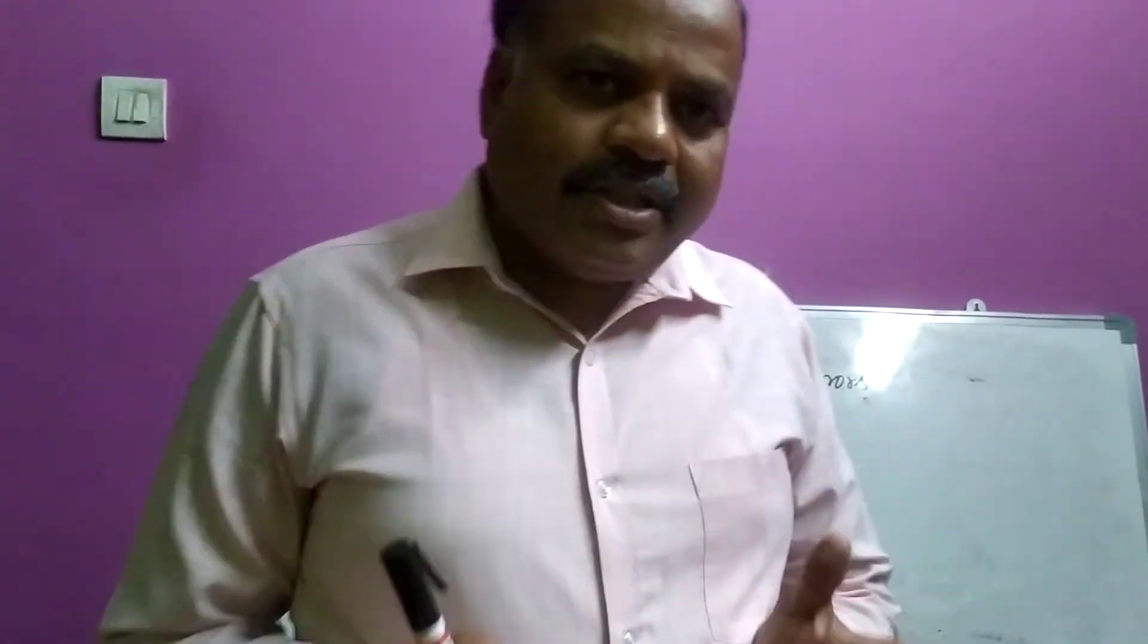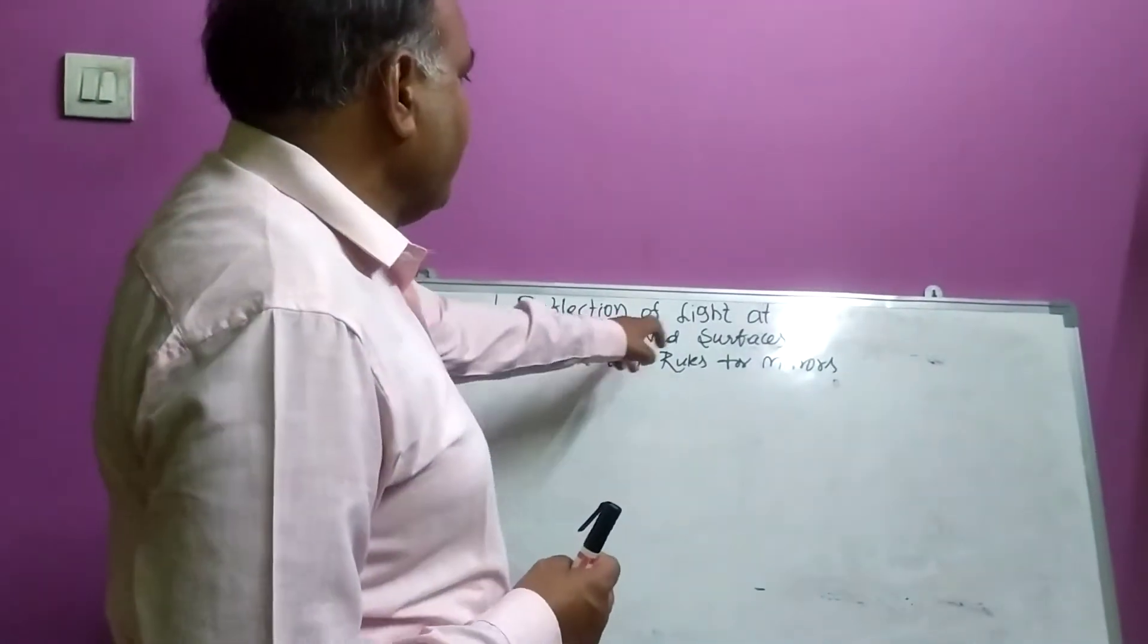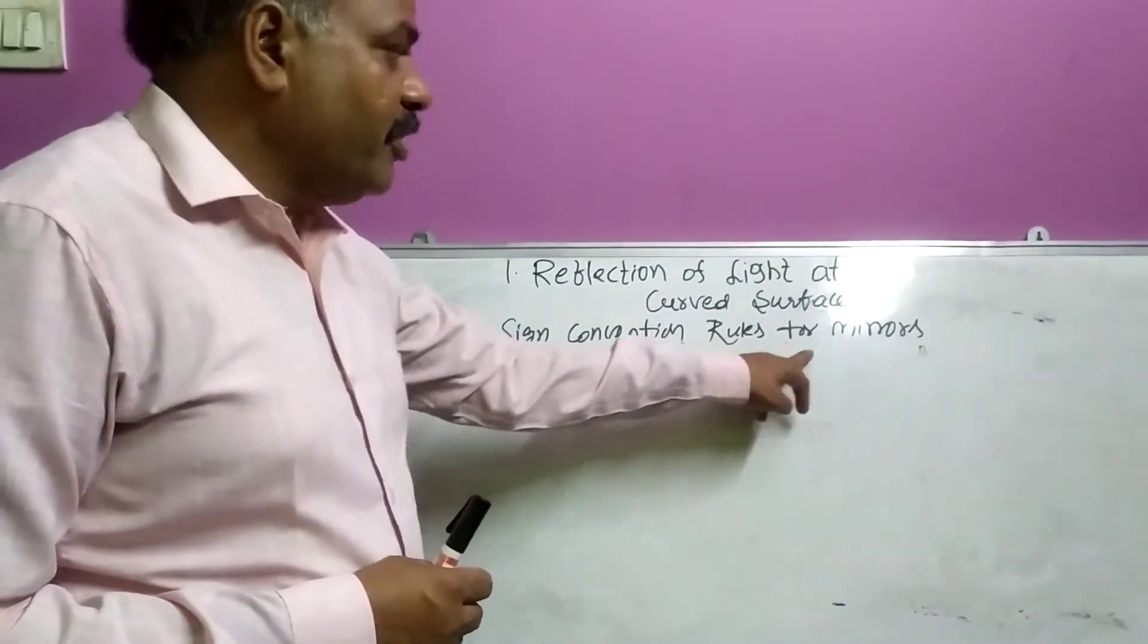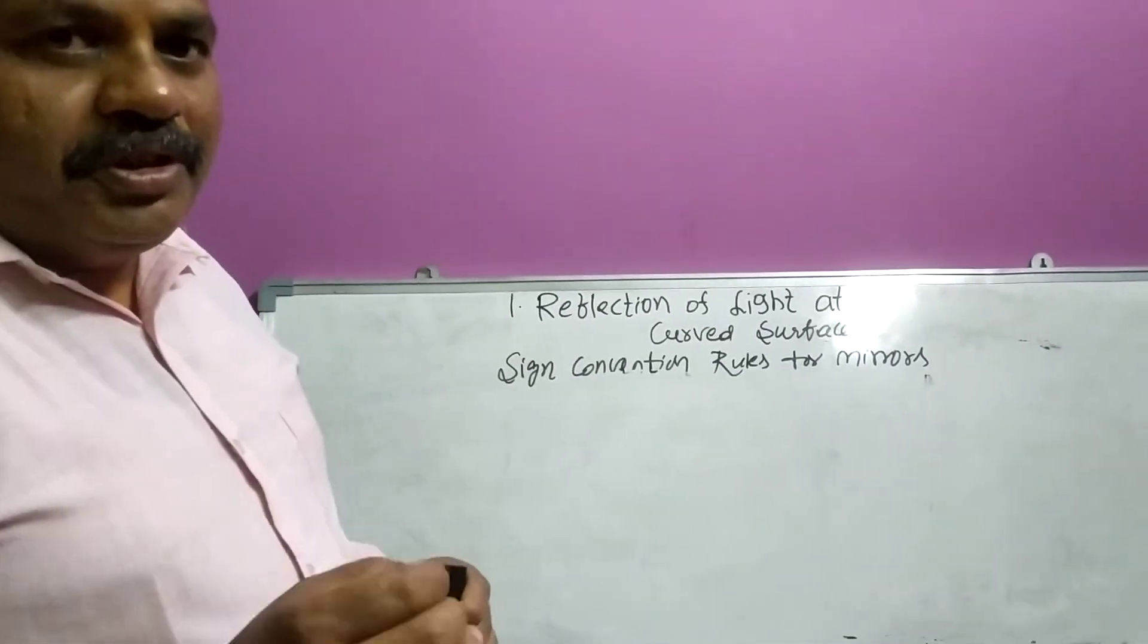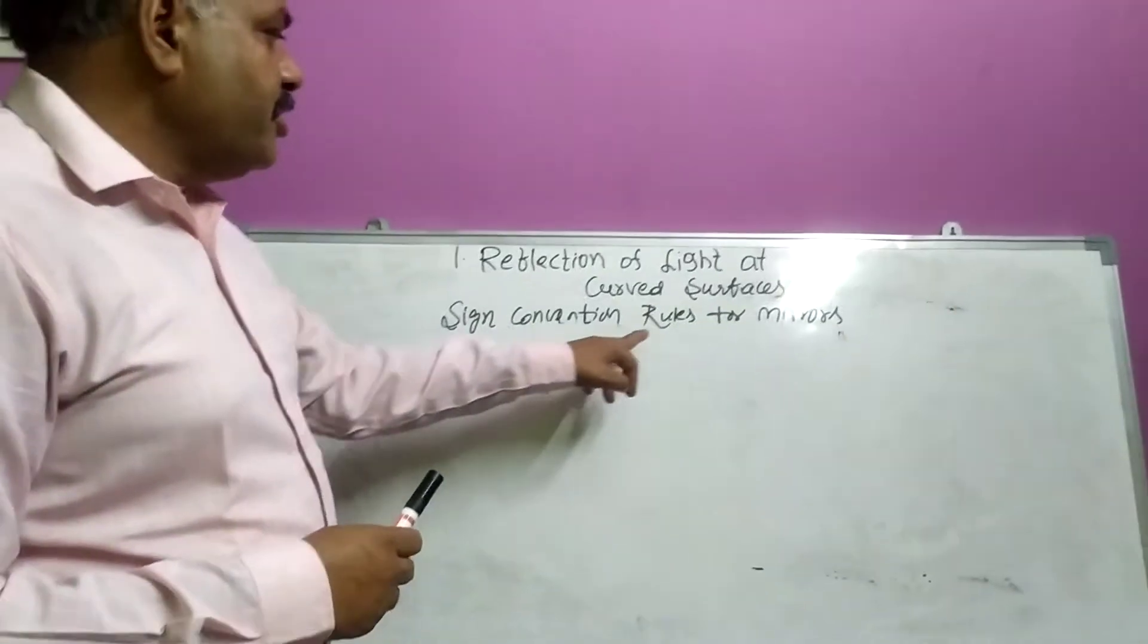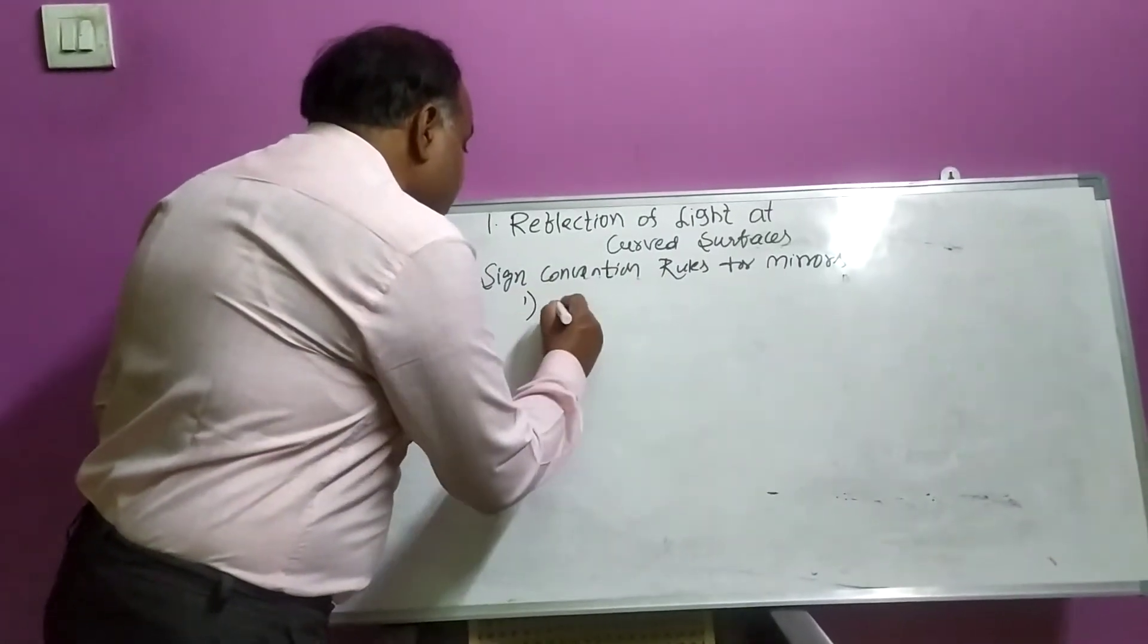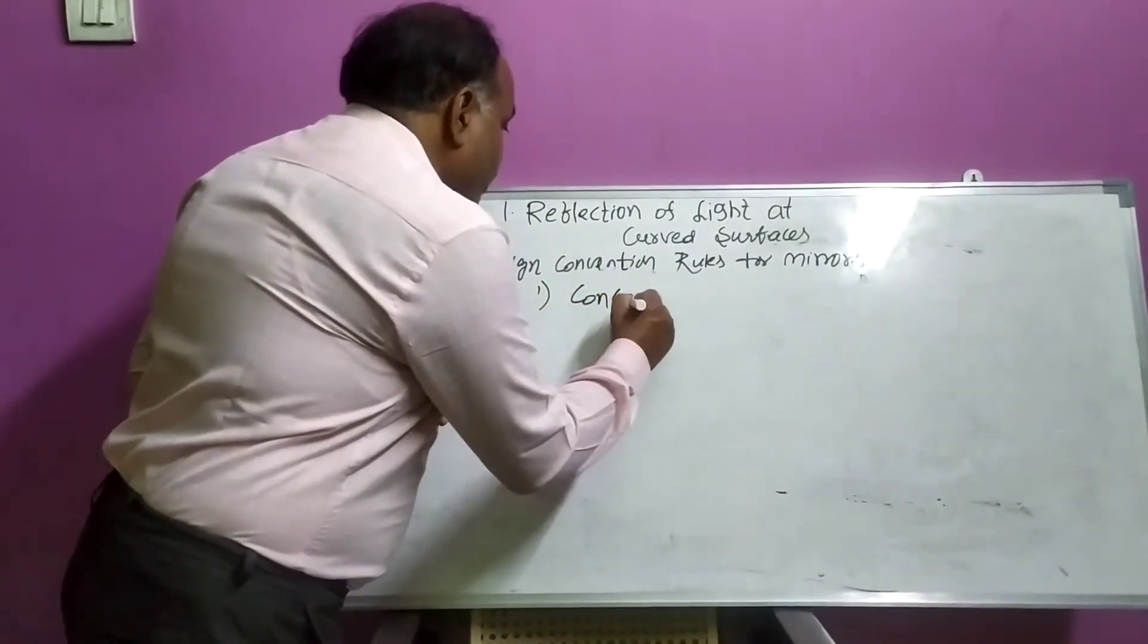Today, in our first lesson, reflection of light at curved surfaces, sign convention rules for mirrors. Now, we are going to discuss sign convention rules for mirrors. In these mirrors, I am taking firstly concave mirror.